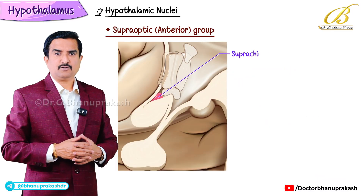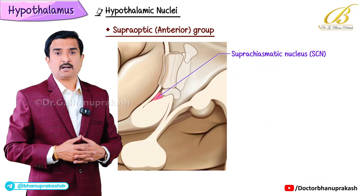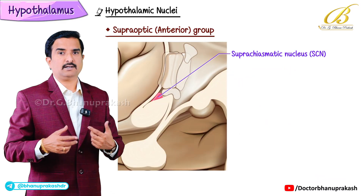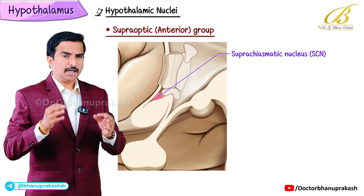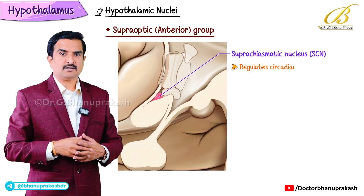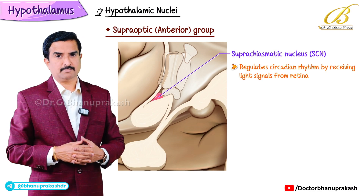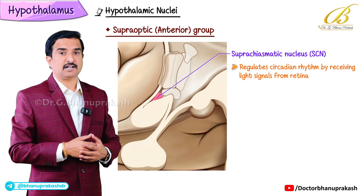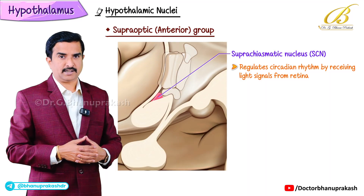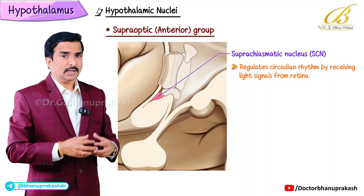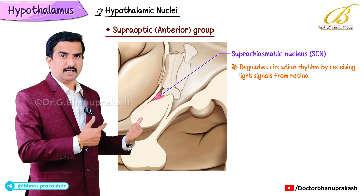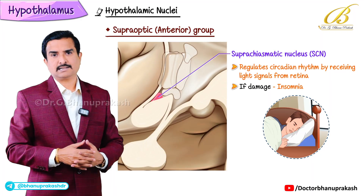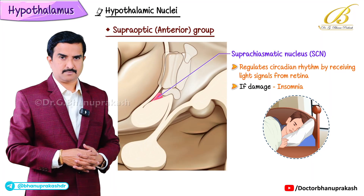The second nucleus is the supra-chiasmatic nucleus, which we call our body clock. It regulates the circadian rhythm by receiving light signals directly from the retina. Lesions here may cause insomnia or other sleep disorders.